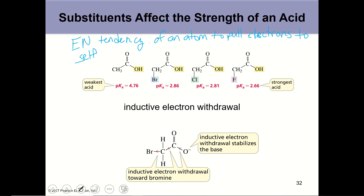We call this inductive electron withdrawal. An electronegative atom at another position on a molecule will withdraw electrons to itself if it's highly electronegative. By withdrawing electrons towards itself, it weakens other bonds, and that will cause an acid proton to have a weaker bond.